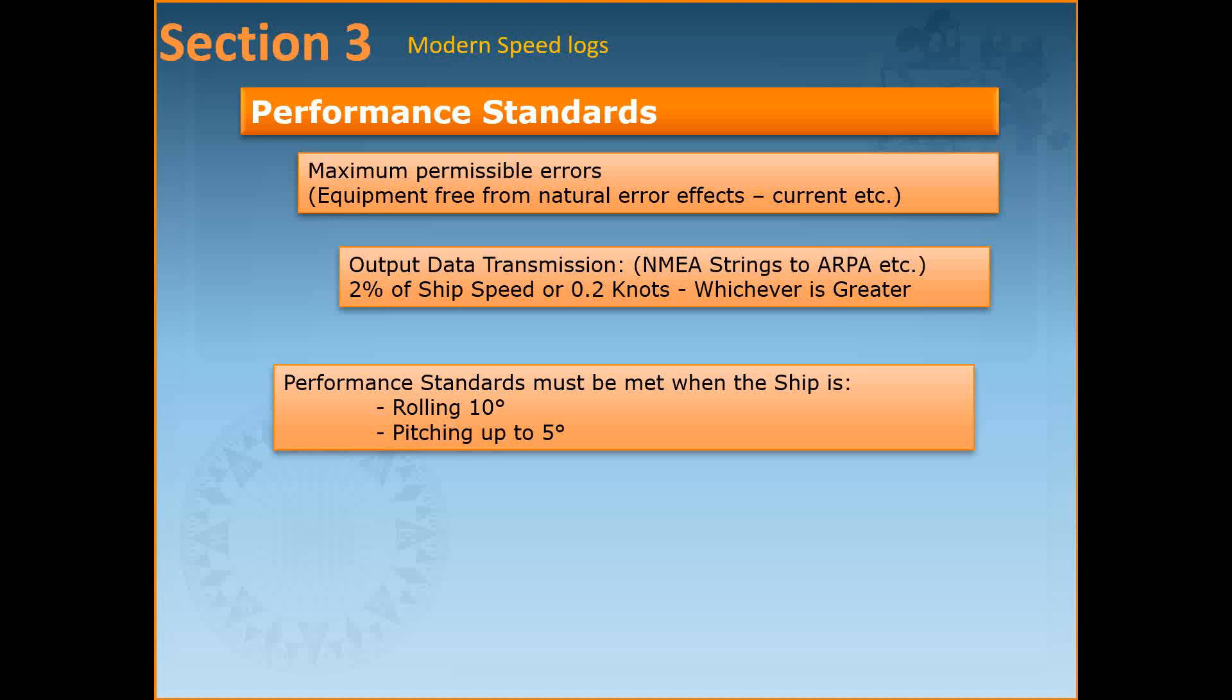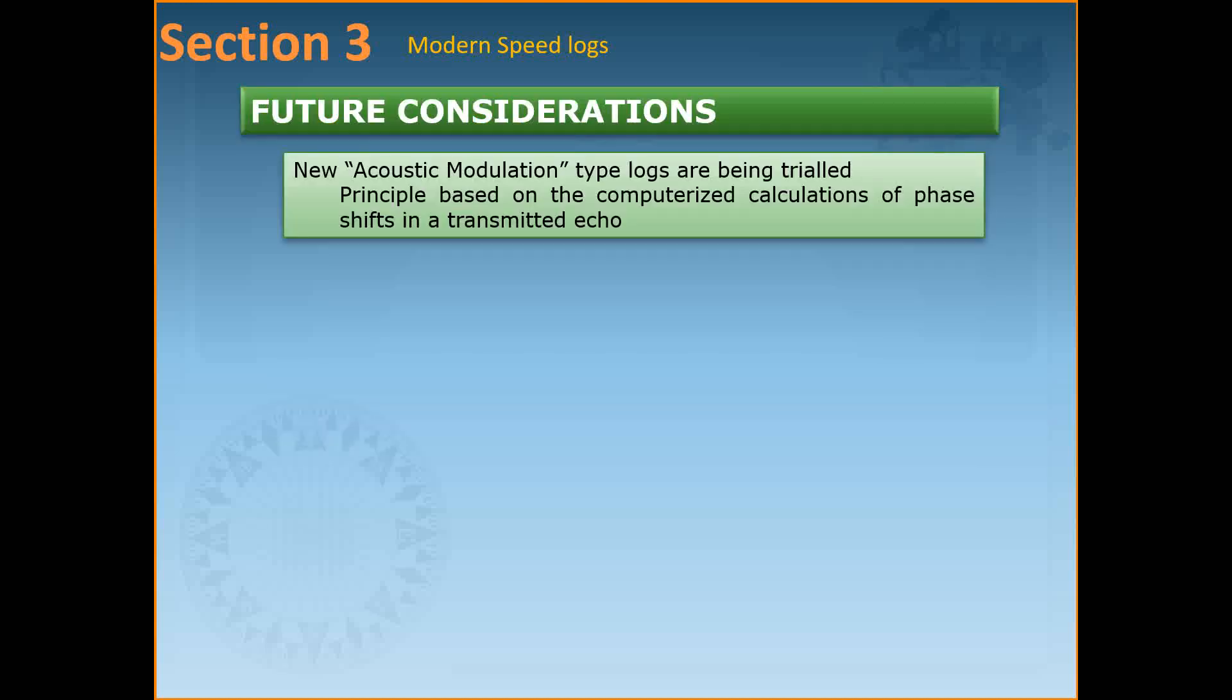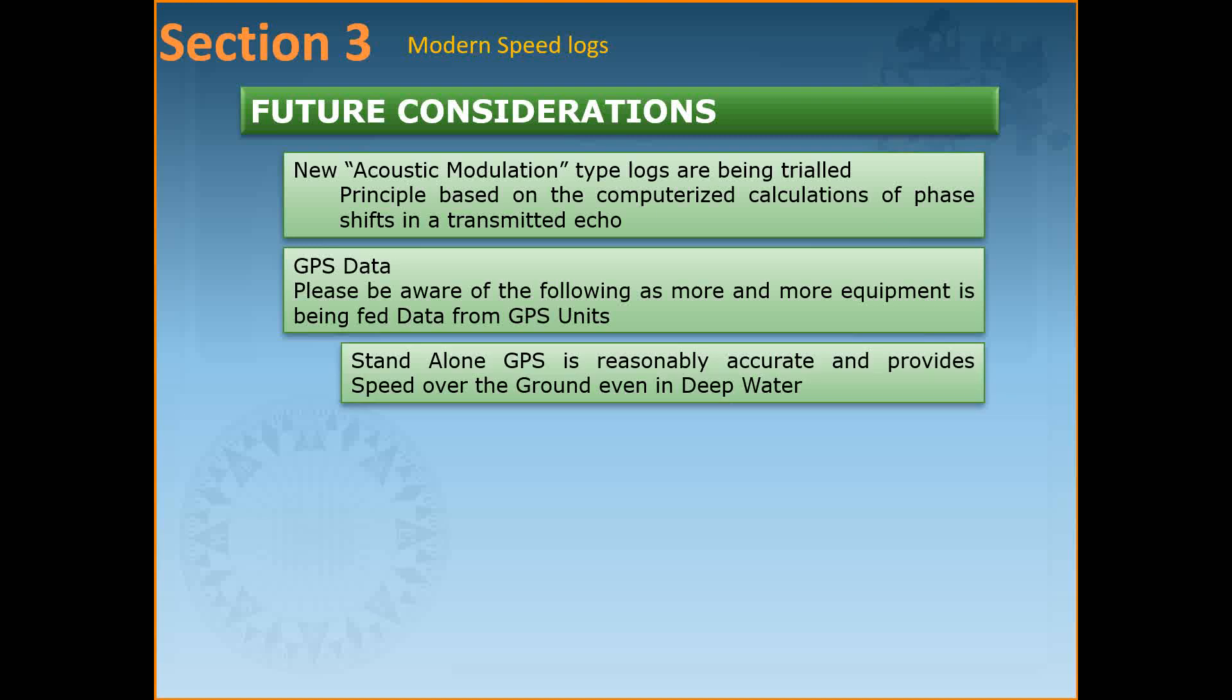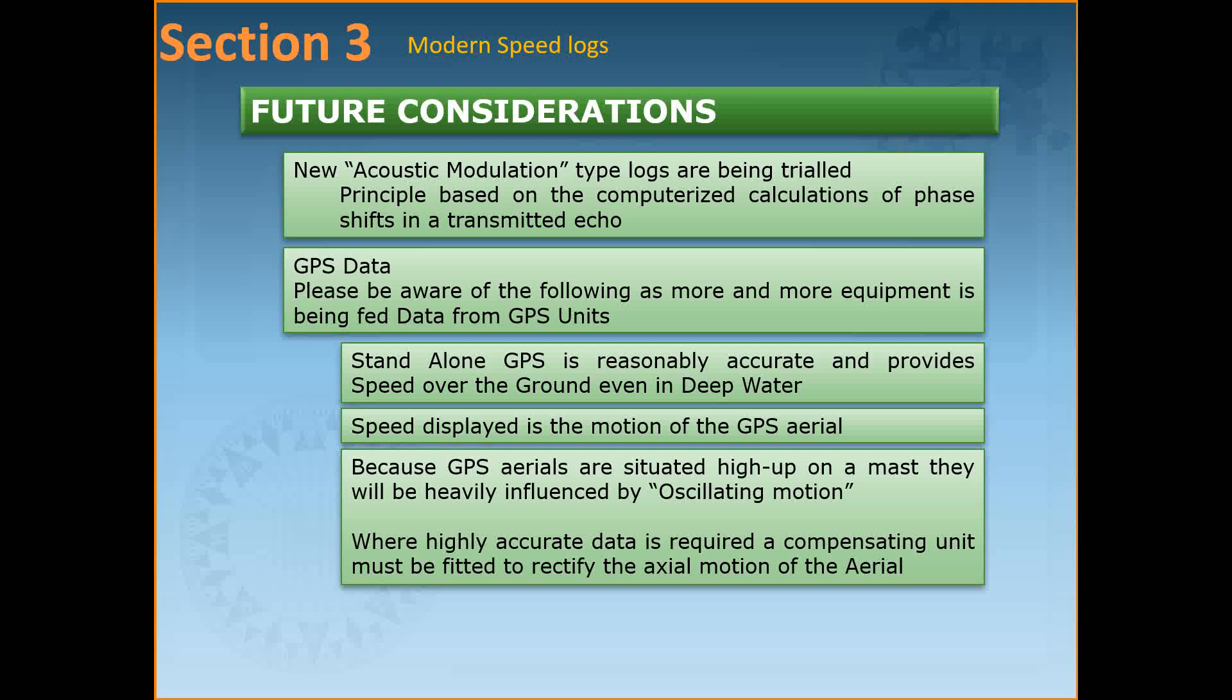For future considerations, new acoustic modulation type logs have been trialed. The principle is based on the computerized calculations of phase shifts in the transmitted echo. Please be aware of the following as more and more equipment is being fed data from the GPS units: stand-alone GPS is reasonably accurate and provides speed over the ground even in deep water, which is not the case with the DR log.